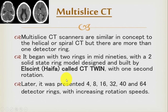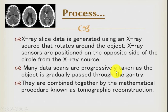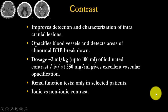In image processing, data is generated as the x-ray source rotates around the object. X-ray sensors are positioned on the opposite side of the circle from the x-ray source. Many data scans are progressively taken as the object is gradually passed through the gantry, and they are combined using a mathematical procedure known as tomographic reconstruction.